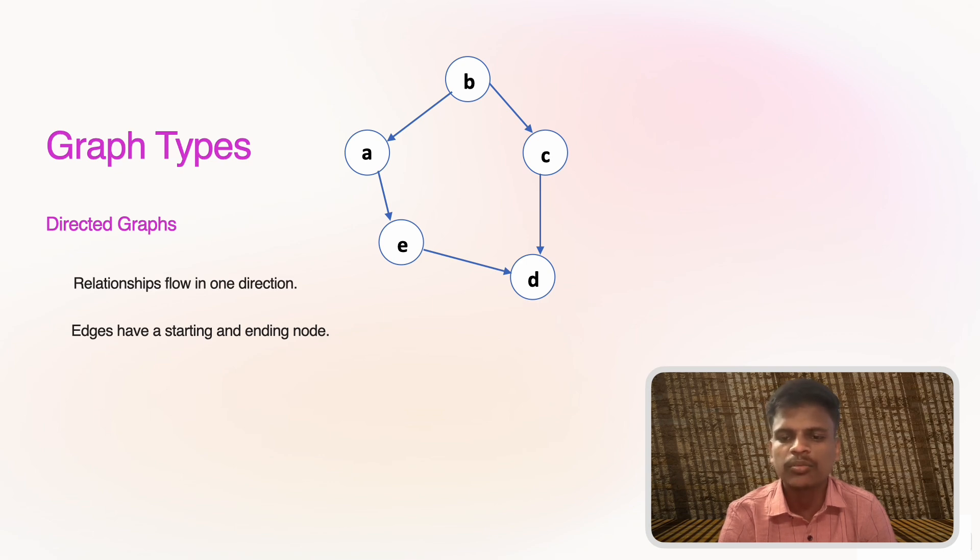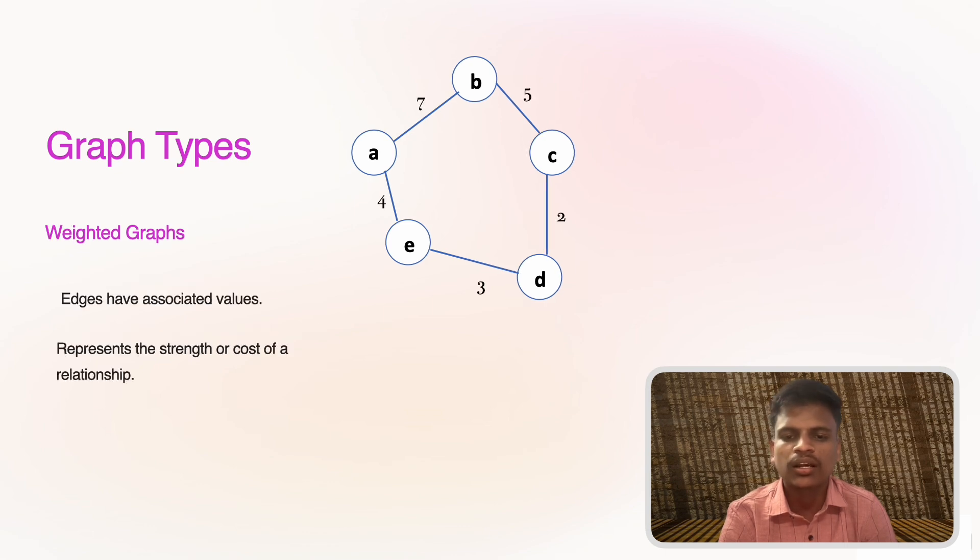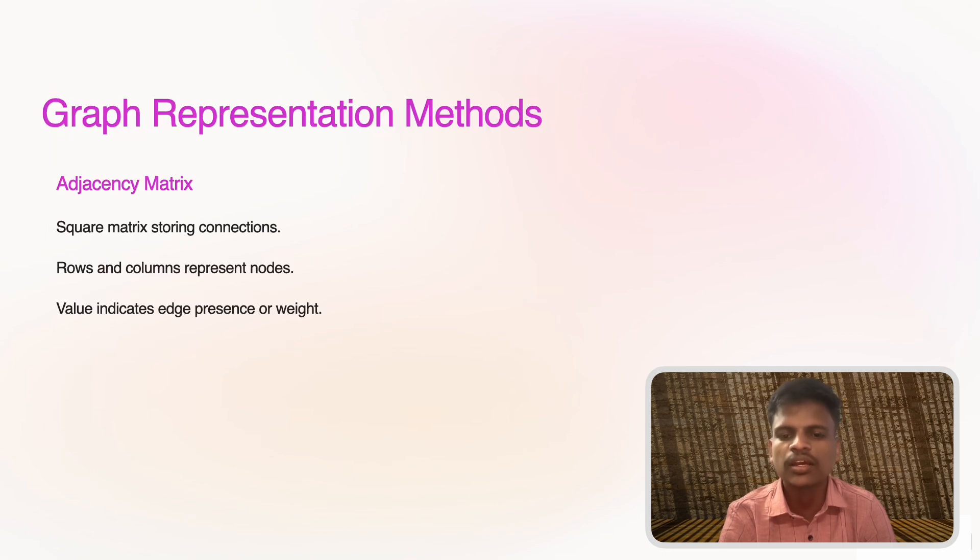Next, weighted graphs: these graphs have edges with weights which represent distances, costs, or strength of relationships. An example would be a map where each road has a distance value. This allows us to find the shortest or most efficient path between locations.